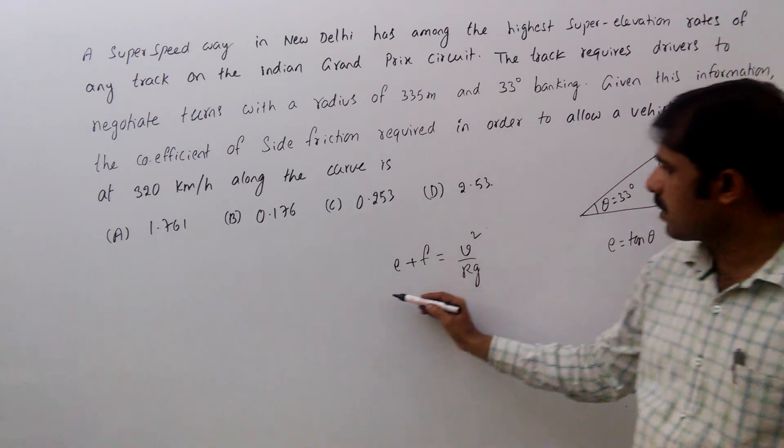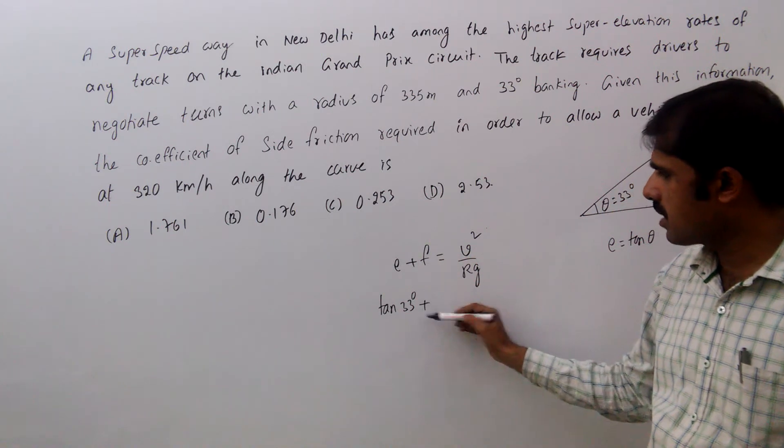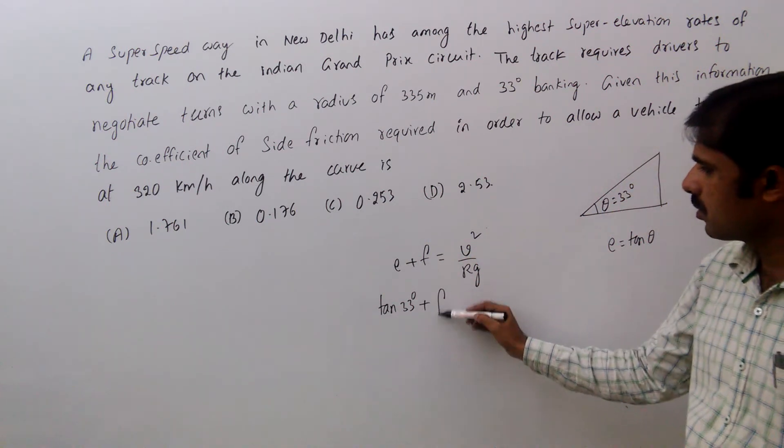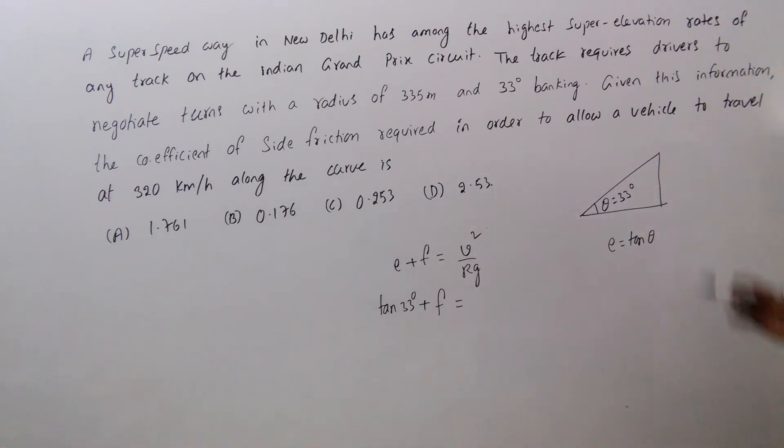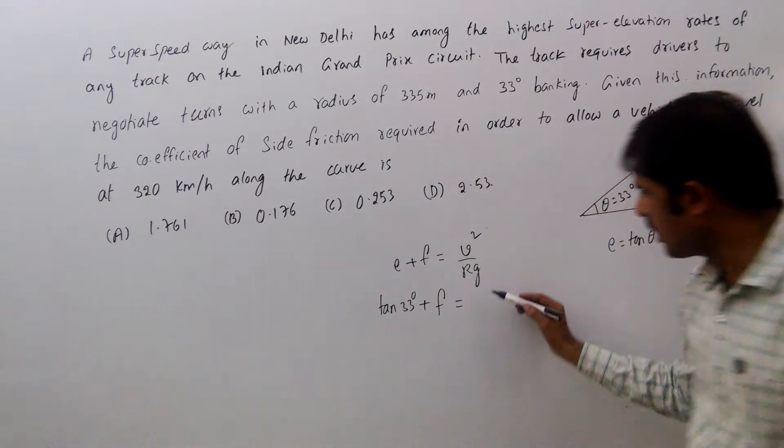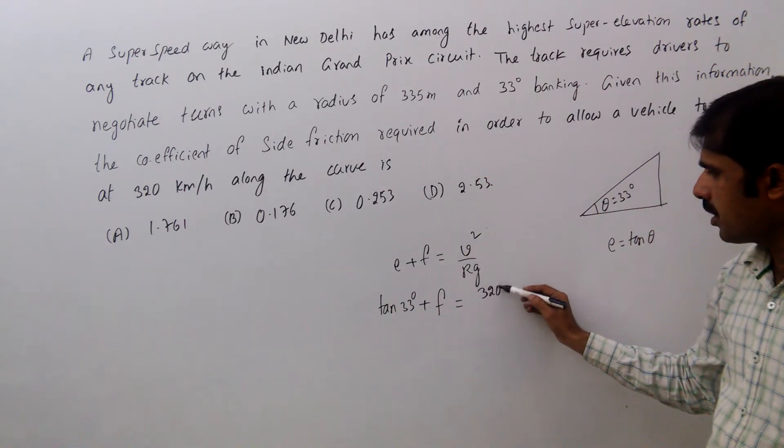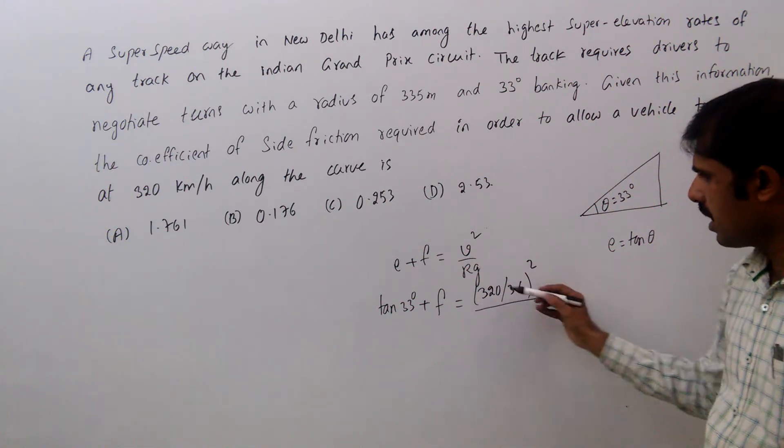That means E is tan 33 degrees plus F. We don't know F, we need to find it. V is velocity 320 km per hour, that is 320 by 3.6 whole square by R.